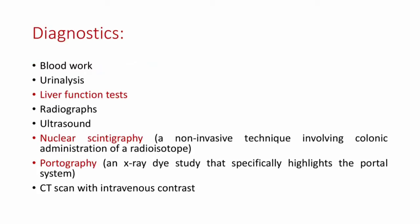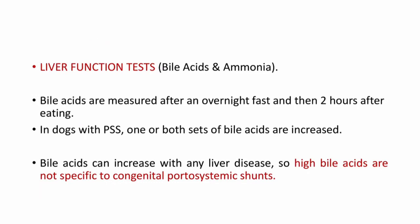Now let's see the diagnostic methods for PSS. These include blood work, urinalysis, liver function test, radiograph, ultrasound, nuclear scintigraphy — a non-invasive technique involving colonic administration of radioisotope — and portography, which is an x-ray dye study that specifically highlights the portal system, and CT scan with intravenous contrast. For liver function tests, mainly bile acids and ammonia: bile acids are measured after an overnight fast and then two hours post-feeding. In dogs with PSS, one or both sets of bile acids are increased. Bile acids can increase with any liver disease, so high bile acids are not specific to congenital portosystemic shunts.